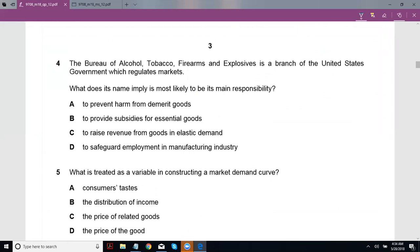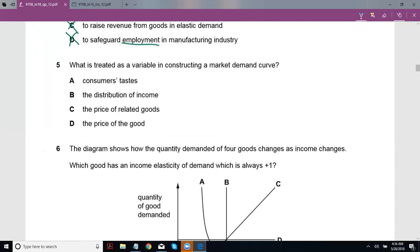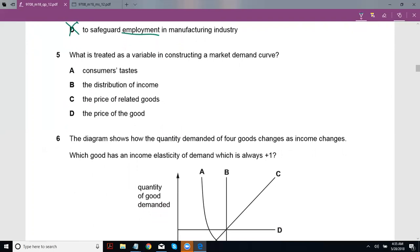The Bureau of Alcohol, Tobacco, Firearms and Explosives is a branch of the United States government which regulates markets. What does its name imply is most likely to be its main responsibility? A, to prevent harm from demerit goods. Yeah, most likely because alcohol, tobacco, firearms, explosives are pretty good examples of goods that have negative externalities making them demerit goods. So obviously they're not going to be providing subsidies. They're not going to be raising revenue from goods and elastic demand. They're not going to be looking at employment, like with a name like that they're not going to be looking at employment.